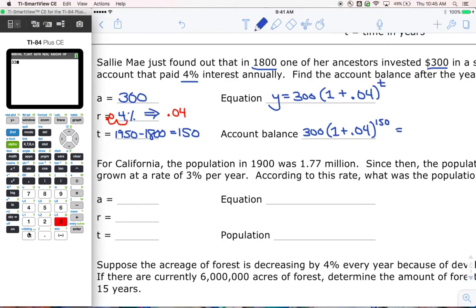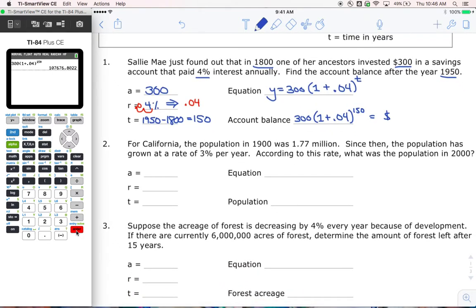We've got 300 times, with parentheses, we have 1 plus 0.04, or just 1.04 to the power of, here's my exponent button, 150. It's going to be a big number. Look at that - $107,676.80. We've got two decimal places because it's money. So $107,676.80. Hopefully that wasn't too bad. Let's take a look at the next part.